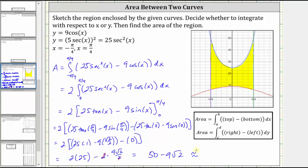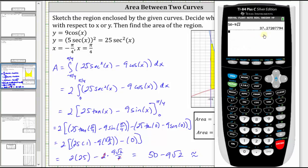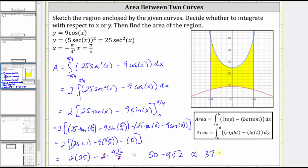Let's also get our decimal approximation to four decimal places, which gives us 37.2721. I hope you found this helpful.